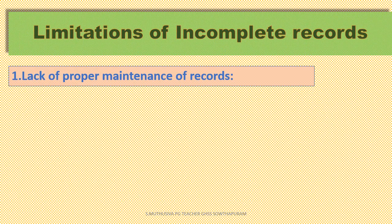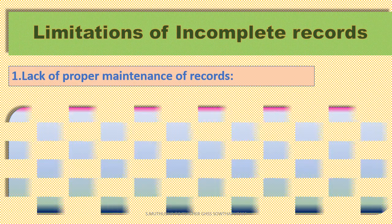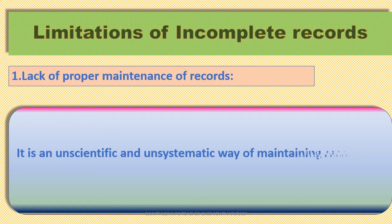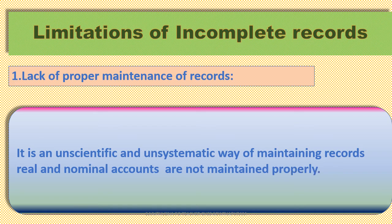First limitation — Lack of Proper Maintenance. It is an unscientific and unsystematic way of maintaining records. Real and nominal accounts are not maintained properly.